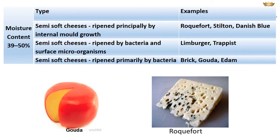Semi-soft cheeses contain 39–50% moisture and may be ripened by internal mould growth, ripened by bacteria and surface microorganisms, or ripened mainly by bacteria. Examples include Roquefort, Stilton, Danish Blue, Limburger, brick, Gouda and Edam.